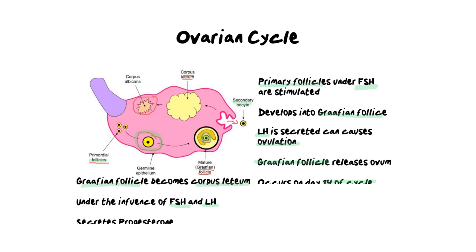The corpus luteum begins to secrete progesterone — the pregnancy hormone. Let's unpack what all of these hormones are doing because this is really important. Follicle stimulating hormone is the hormone that stimulates and grows the follicle, and luteinizing hormone is the hormone that releases the egg. So these two hormones are responsible for growing and maturing our egg or ovum. Now that we've made it and released it, we need to wait to see if we get pregnant, and that is where progesterone comes in.